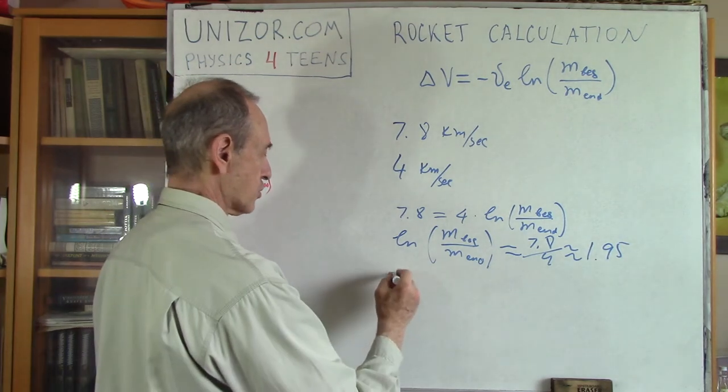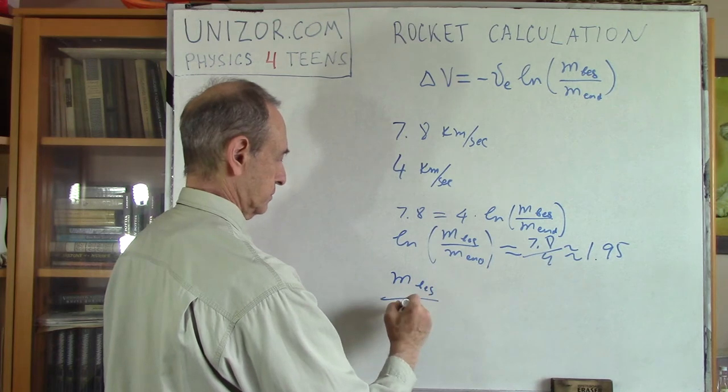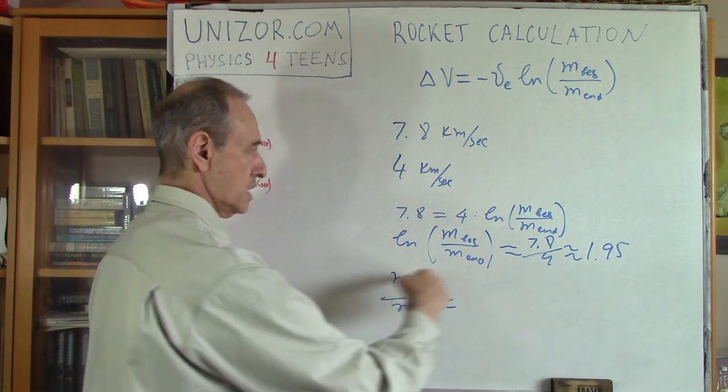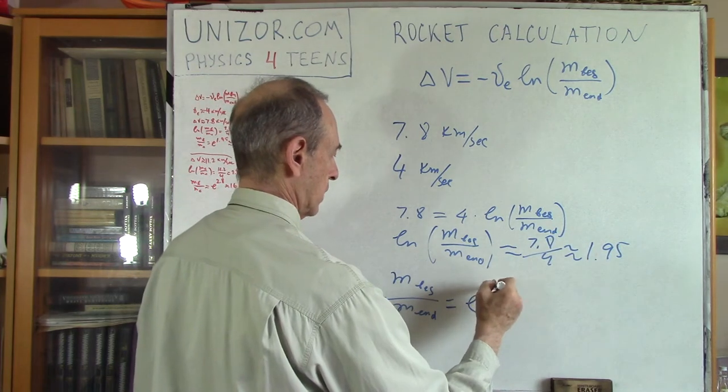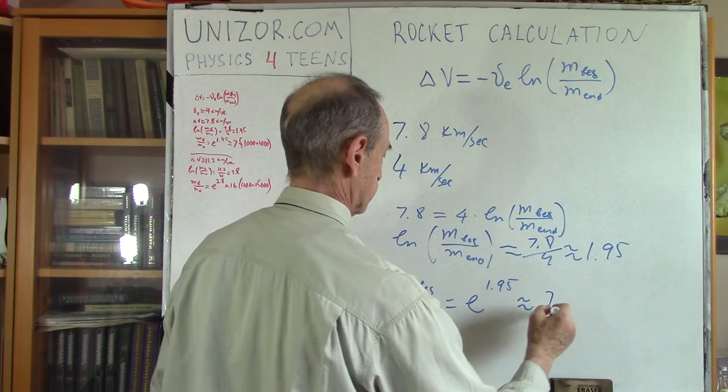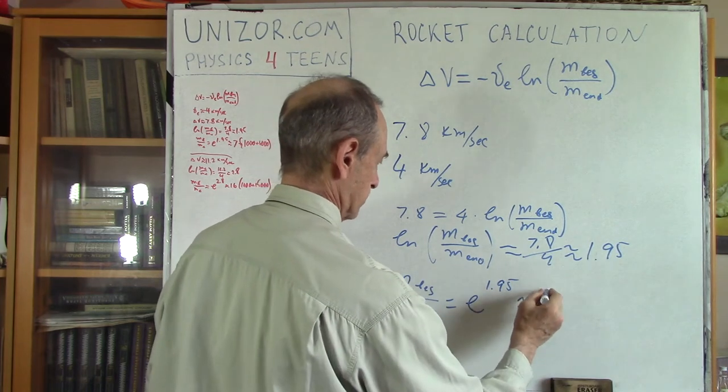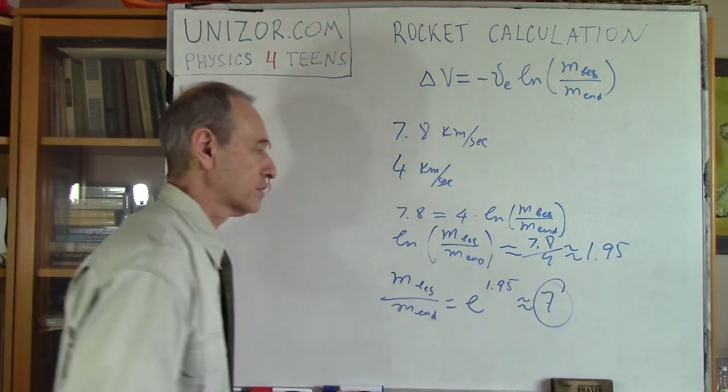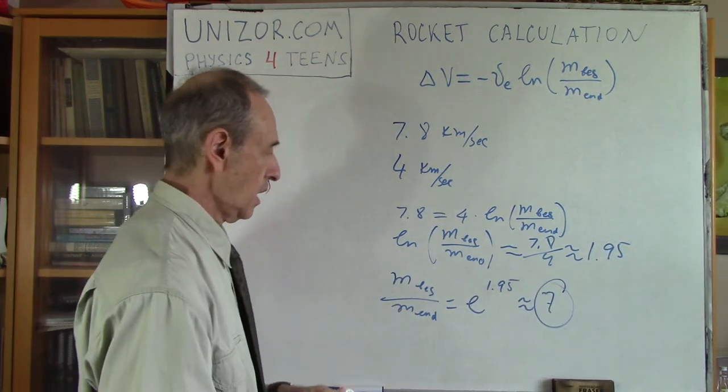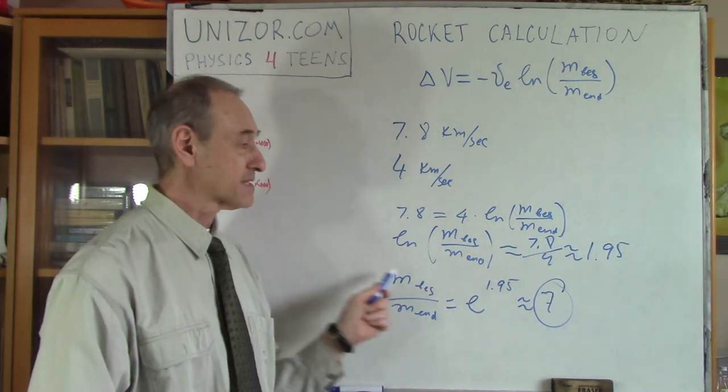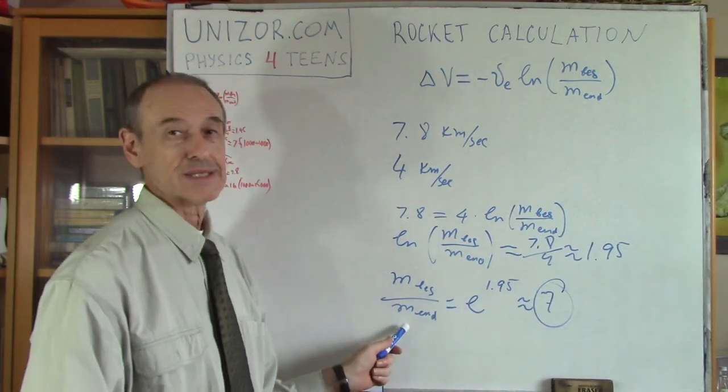So the ratio itself equals e to the power of 1.95, which is approximately 7. So here is very important ratio. The mass of the rocket in the beginning of the movement is seven times greater than the mass at the end.